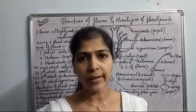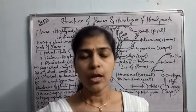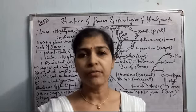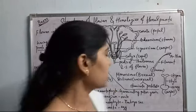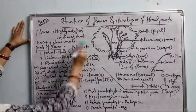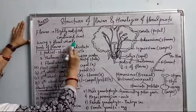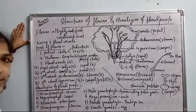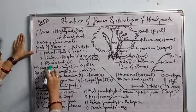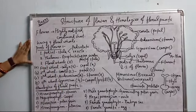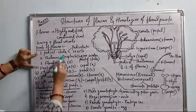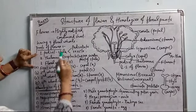Now, what is the structure of a complete flower? A flower is the highly modified, condensed shoot having four floral whorls. The flower is divided into three parts. First is the pedicel — the pedicel is the stalk of the flower by which the flower is attached to the stem.